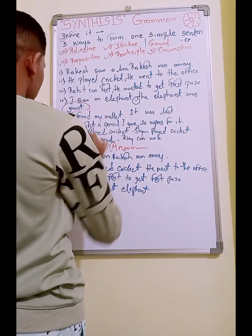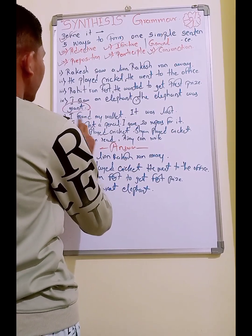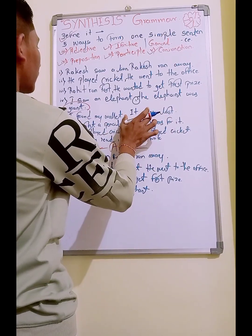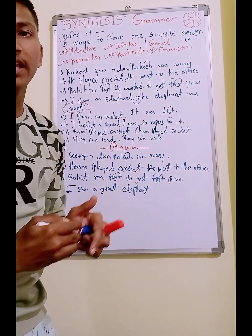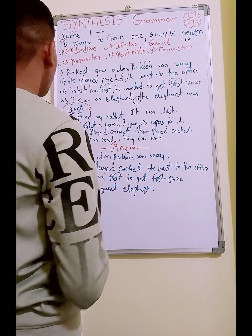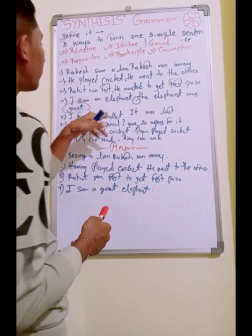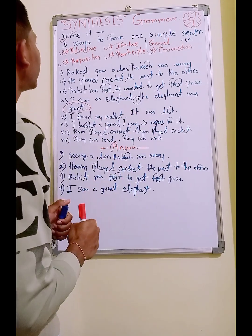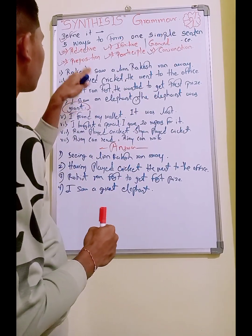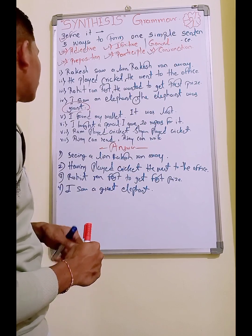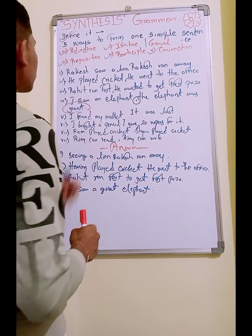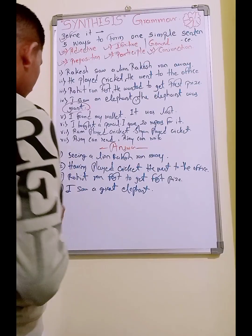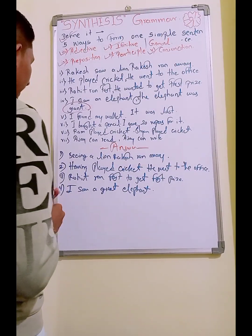Fifth question: 'I found my wallet. It was lost.' So the answer is: 'I found my lost wallet.' The adjective 'lost' combines both sentences.